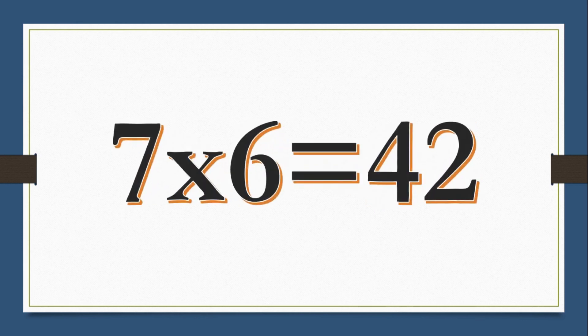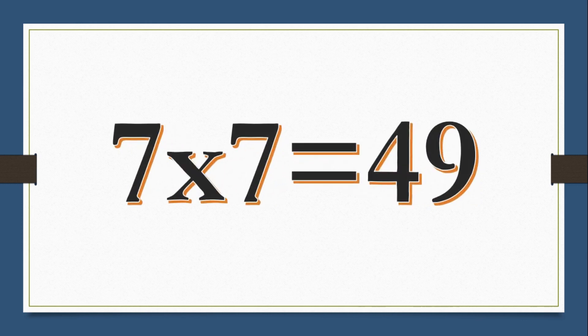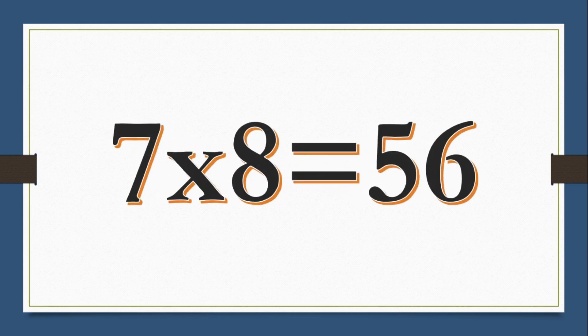7 5s are 35, 7 6s are 42, 7 7s are 49, 7 8s are 56.